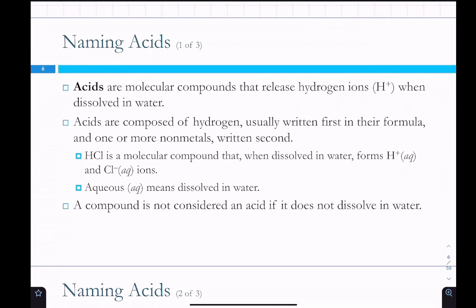Acids. So, acids are a special kind of molecular compound. They release hydrogen ions when they dissolve in water. Acids are composed of hydrogen, which is usually written first in their formula, and then one or more non-metals, which are written second. We're going to talk about two different kinds of acids. HCl is a binary acid. When you add this to water, it forms H+ ions and Cl- ions. And I think we've talked about aqueous. AQ means aqueous or dissolved in water. This one gets overlooked a lot. A compound is not considered an acid if it does not dissolve in water. So, all of our acids will be aqueous.